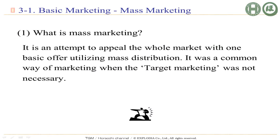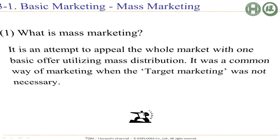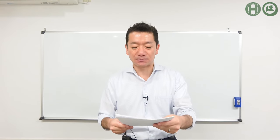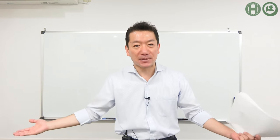Please have a look at slide number one. This is the definition of mass marketing. What is mass marketing? It is an attempt to appeal to the whole market with one basic offer — one simple product, goods, or service — utilizing mass distribution. It was a common way of marketing when target marketing was not necessary. You try to sell and appeal goods and services to an entire market, not segmented — the entire market with one basic marketing strategy, ignoring market segment differences, appealing to as many people as possible.